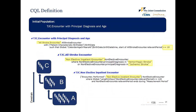Using real concrete terms, we have three definitions to build the initial population. Starting with TJC dot non-elective inpatient encounter, it's looking for an inpatient encounter. Then in the next block, all stroke encounter, notice how it starts with the previous definition name and adds diagnosis criteria. And then in encounter with principal diagnosis and age, we start with the previous definition and add age criteria. Encounter with principal diagnosis and age is then directly used as the initial population.